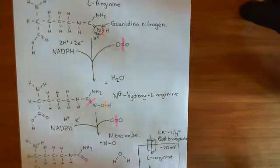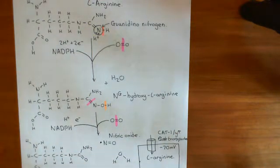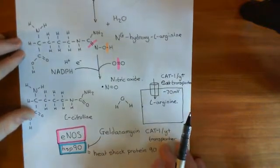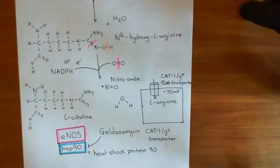Therefore, this transporter, the CAT-1 slash Y-plus transporter, uses the electrical potential difference across the membrane, where usually the intracellular compartment has a lower electrical potential than the extracellular compartment, lower by usually around 70 millivolts. It uses that to transport this cationic amino acid into the cytoplasm.